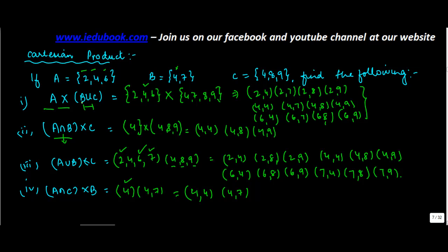I think the simplest technique is whenever you have these kinds of elements B union C, A union C, A intersection B, first find it out. Then what you have is one set and then you have another set. Do a multiplication of these two and you will reach your solution.